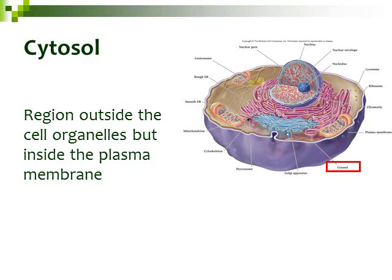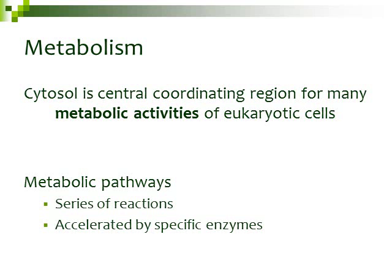We're going to start by looking at parts of a cell, specifically the cytosol. I have the animal cell up here, and in the red box I have the cytosol highlighted to show what part of the cell we're looking at. The cytosol is the region outside the organelles but inside the plasma membrane. It's a liquid gelatin-like substance that has solutes dissolved in it, enzymes, and ribosomes, and it helps with the metabolism of the cell — some of those chemical reactions. The cytosol is the central coordinating region for many metabolic activities of the eukaryotic cell.